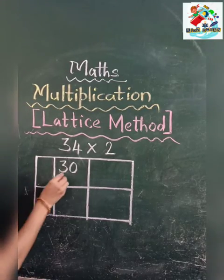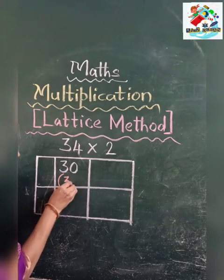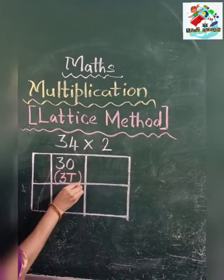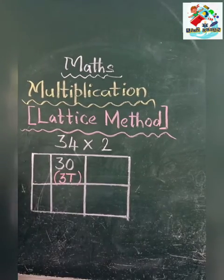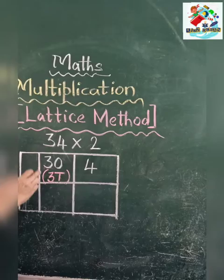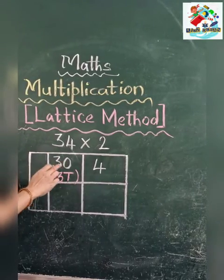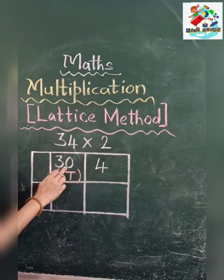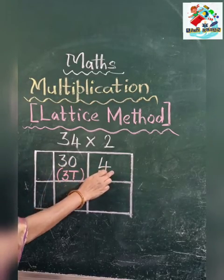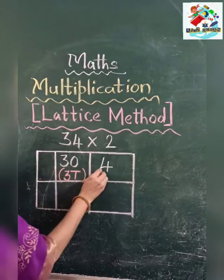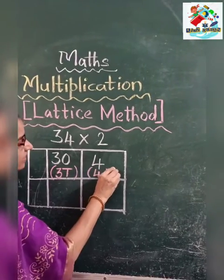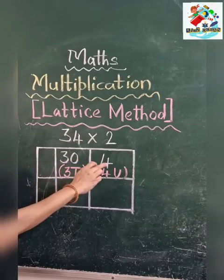And 3 is what? 3 tens correct children. 30 means 3 tens and 4. So what we need children? We broke the number 34 into 30 and 4, that means 3 tens and 4 units, correct? Then we add 30 plus 4.